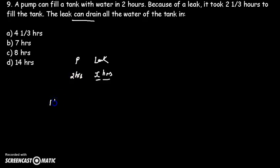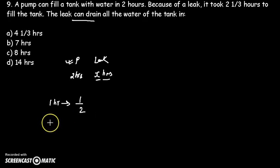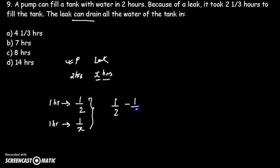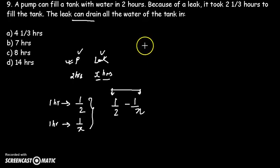In 1 hour, the work done by the pump is 1/2 of the tank. The leak drains out 1/X of the tank per hour. So the total net work done per hour, when both pump and leak are present, is 1/2 minus 1/X.